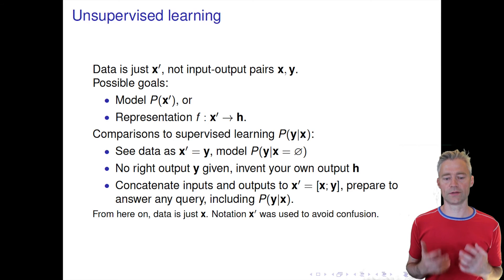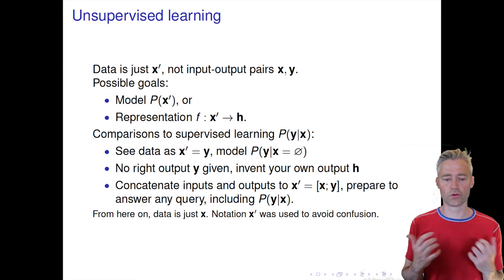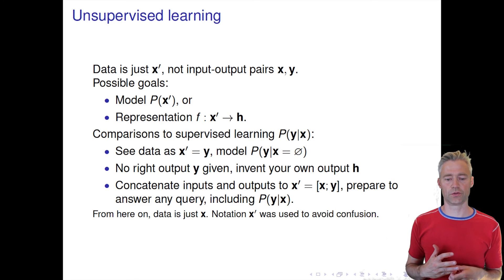And what we want to learn ideally is a density model of the data. If you think about MNIST, it's this 784 dimensional data. We want to find the joint distribution of all the pixels in the image. And we will usually use a so-called latent variable model to do this.